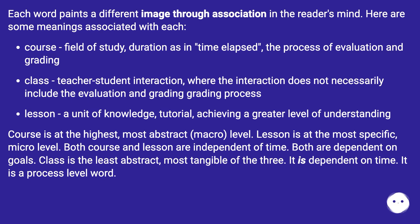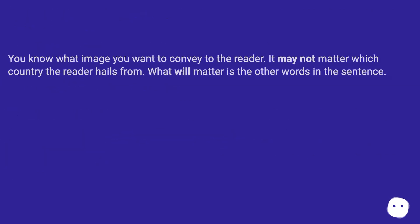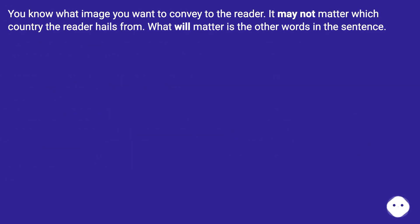Both course and lesson are independent of time, and both are dependent on goals. Class is the least abstract and most tangible of the three — it is dependent on time and is a process-level word. You know what image you want to convey to the reader. It may not matter which country the reader hails from; what will matter is the other words in the sentence.